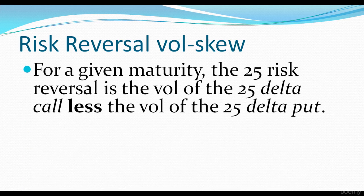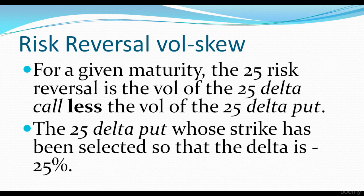For a given maturity, the 25 risk reversal is the volatility of the 25 delta call less the volatility of the 25 delta put. The 25 delta put is the put whose strike price has been selected so that the delta is minus 25.